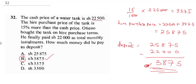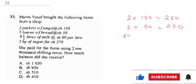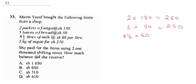The next question: Mary bought the following items from a shop. She bought two packets of flour at 130 shillings each, giving 260 shillings. Five loaves of bread at 50 shillings each gives 250 shillings. Four and a half liters of milk at 60 shillings per liter — that is 60 times 4.5, which equals 270 shillings.